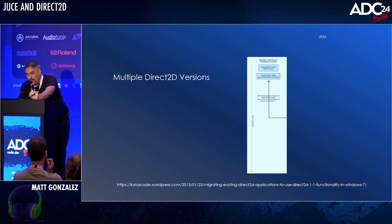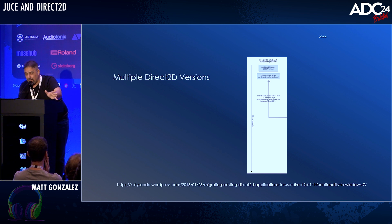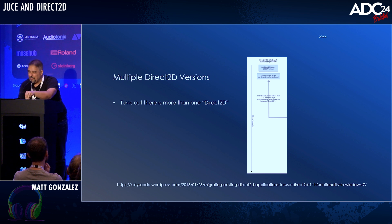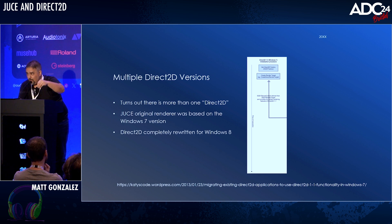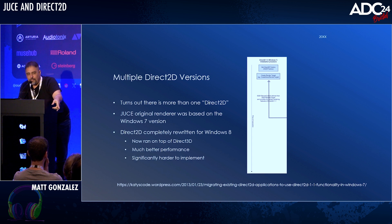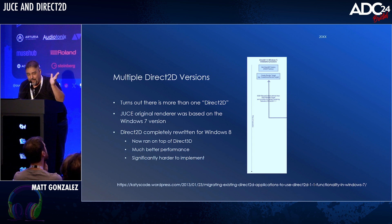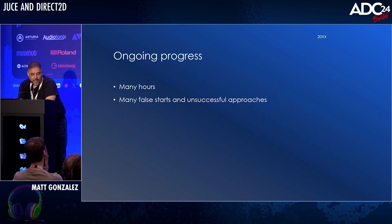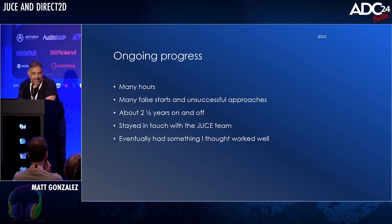It turns out there's more than one thing called Direct2D. Direct2D has different versions and they work completely differently. The one JUCE's renderer was based on was the Windows 7 version, which was terrible — Microsoft seems almost a little embarrassed by it; they never even gave it a version number. Windows 8 Direct2D was completely rewritten to run on top of Direct3D, which made a massive performance difference, but it's also much harder to use. There's a migration guide, and you can see the initialization steps — it's just a lot more work, which I think is part of why it never got finished. I spent more hours on it than I cared to admit — it took two and a half years, on and off, picking it up and coming back to it. Eventually I had something I thought worked pretty well.